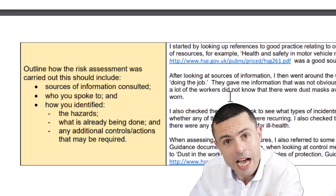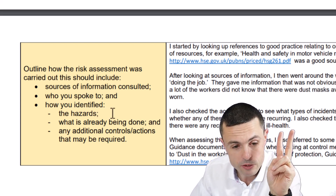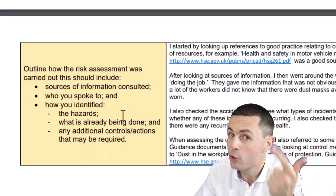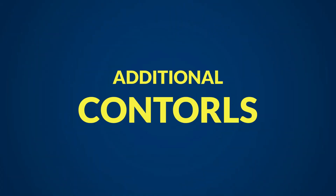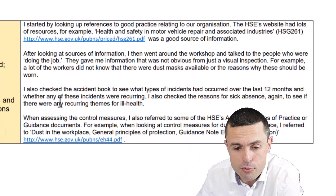Now the next bit is where most people make a complete hash of it: how you identified three things — the hazards, what is already done, and what additional controls you need to do. Most people mess it up because they just say 'I checked this guidance document.' Okay, you checked the guidance document, but what did you do with that? We have to identify hazards, existing controls, and additional controls.